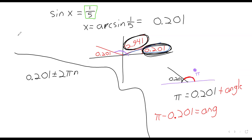Student question: if we were looking for sine of x equals negative one-fifth, then we would just want the bottom two quadrants instead of the top two. That's exactly correct.